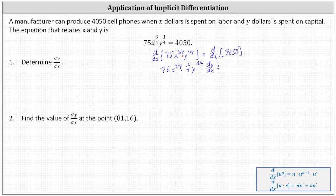Then we have plus the second function y to the one-fourth times the derivative of 75x to the three-fourths, which is 75 times three-fourths times x to the power of negative one-fourth. Because we have an x term, we don't need to apply the chain rule — we do not include a factor of dy/dx. On the right side, the derivative of 4,050 with respect to x is zero.